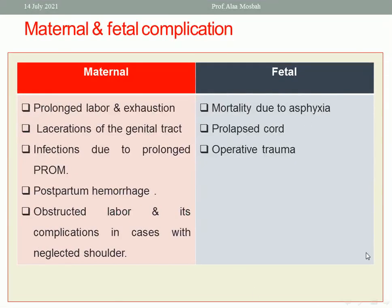What are the maternal and fetal complications of shoulder presentation? Maternal complications include prolonged labor, laceration of the genital tract, infection due to prolonged premature rupture of membranes, postpartum hemorrhage (atonic or traumatic), and obstructed labor with its complications such as uterine rupture and internal hemorrhage in cases of neglected shoulder. Fetal complications may include asphyxia or death, cord prolapse, fetal distress, or operative fetal trauma.